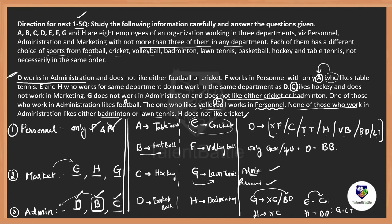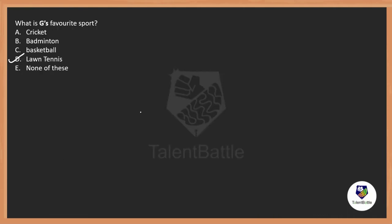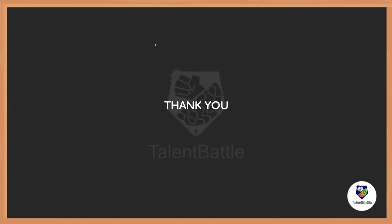Fifth — what is G's favorite sport? Lawn tennis — that's the correct option. Look how quickly all questions are answered once you have mapped out the data. That's the big advantage of data interpretation — you analyze the data first, then answer all questions efficiently. I hope you completely understood the approach. Thank you for watching till the end. If you liked the video, press the like button and join our social media handles — links are in the description.